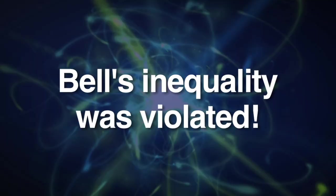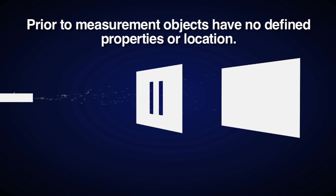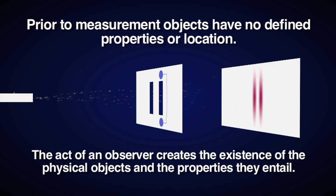Prior to measurement, objects have no defined properties or location. The act of an observer creates the existence of the physical objects and the properties they entail. Who deserves to trust their intuition more than Einstein? And Einstein's intuition told him, like everybody's intuition tells them, that things are really there when you're not looking at them. Well, he was wrong, right? That intuition is incorrect.